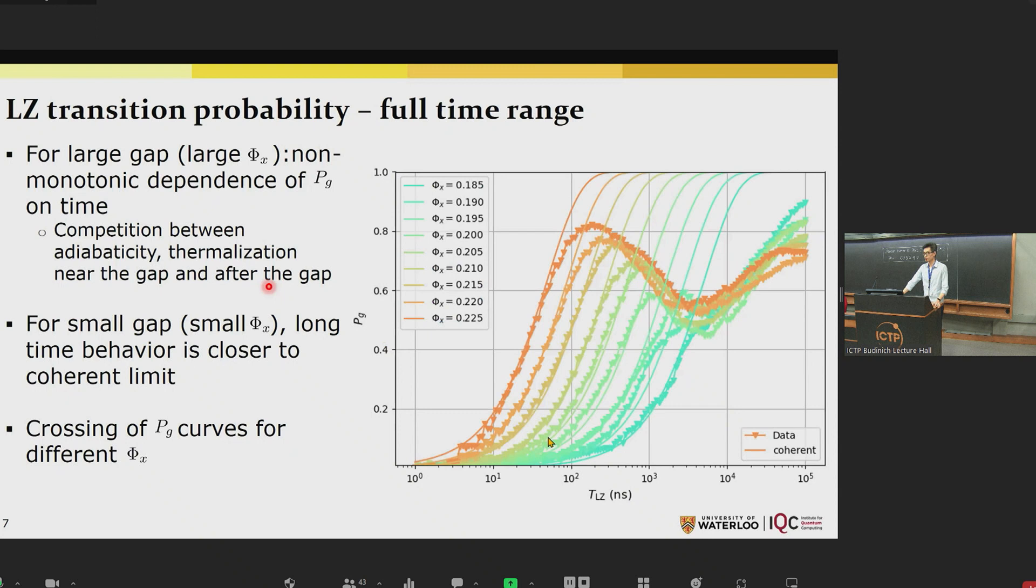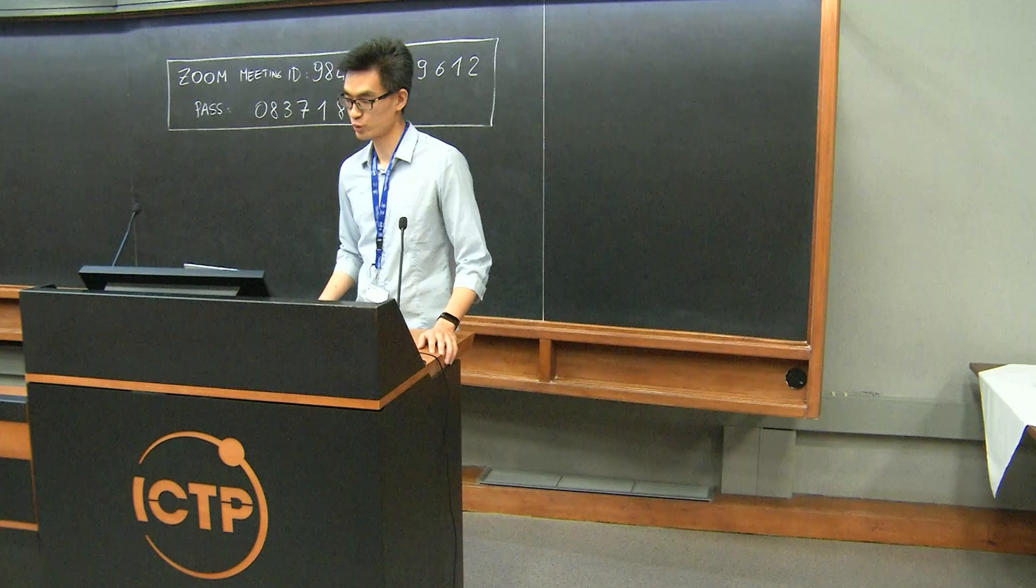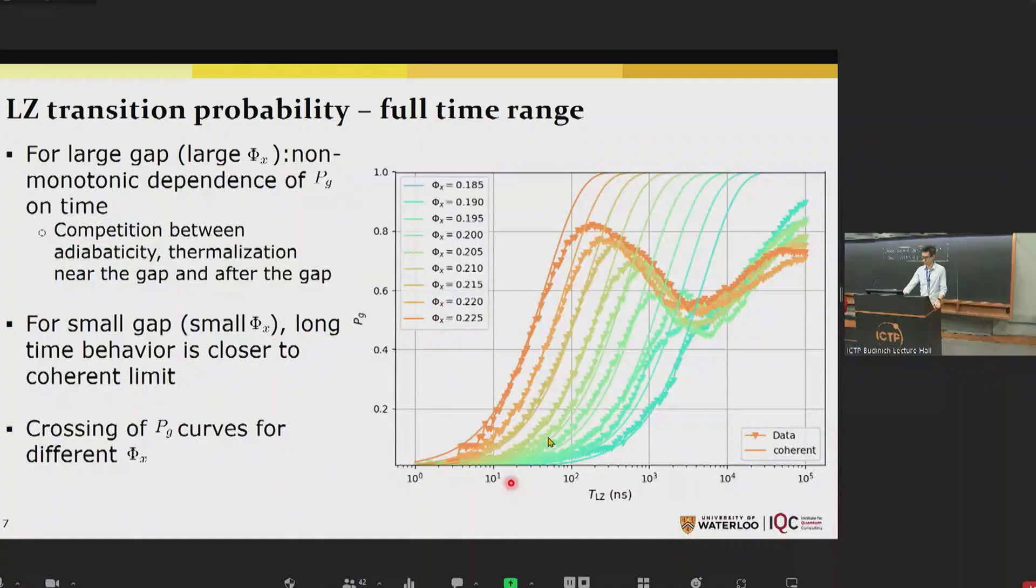After confirming the behavior at short timescales, we look at the full time range that we have measured. Here I'm showing the final ground state probability as a function of T_LZ plotted in log scale for different phi-x. We can see that for large phi-x corresponding to large minimum gap, shown as this orange curve here, we have a non-monotonic dependence of the final ground state probability with respect to the sweep time T_LZ. This is in line with a competition between adiabaticity in the short timescale and thermalization near the gap in the intermediate time scale, and thermal relaxation at the end of the sweep in the long time scale.